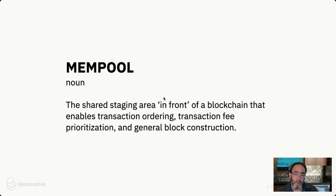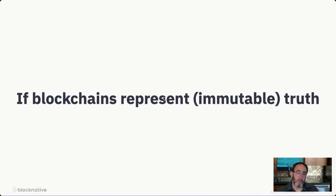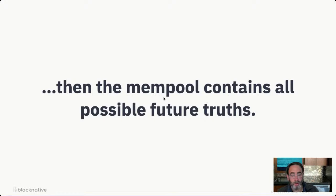One of the things that public blockchain networks like to represent is that they're very consistent environments with very equal access and very predictable. It turns out the mempool is kind of none of those things. Another way to frame it: if on-chain data represents immutable truth — once transactions are confirmed and on-chain and a certain number of blocks have gone by, you can't change them — the mempool contains all possible future truths. The only way to go on-chain is to appear in a mempool, whether public or private. And if you can understand this mempool data at a census level across the entire network, you can actually see the future.